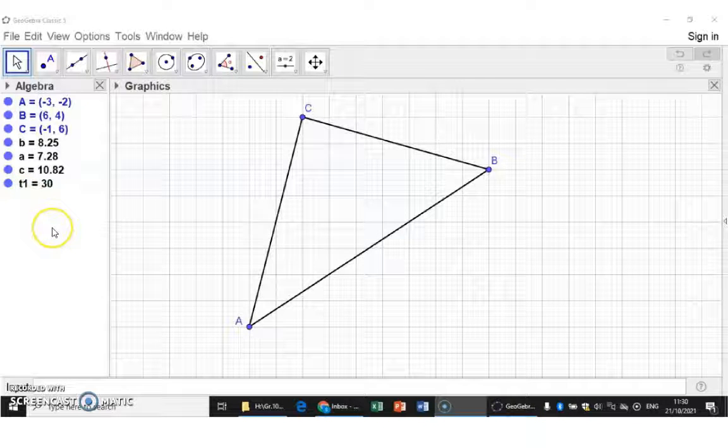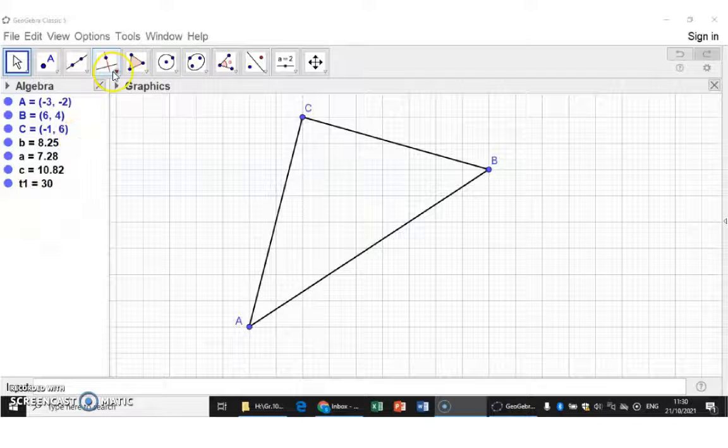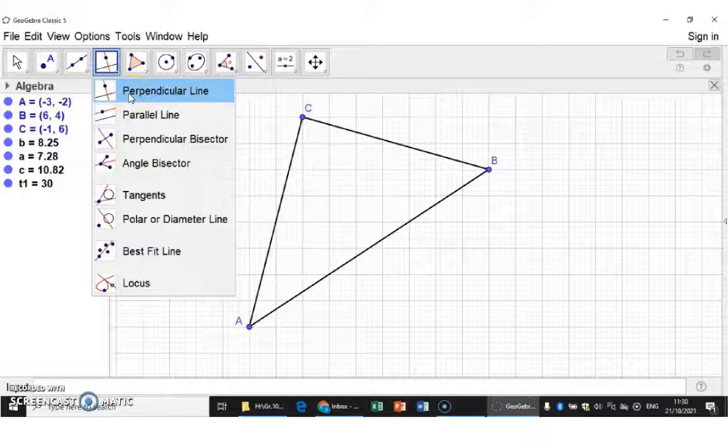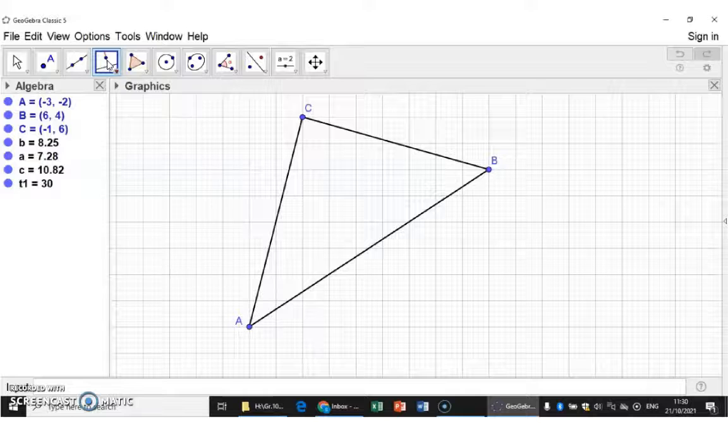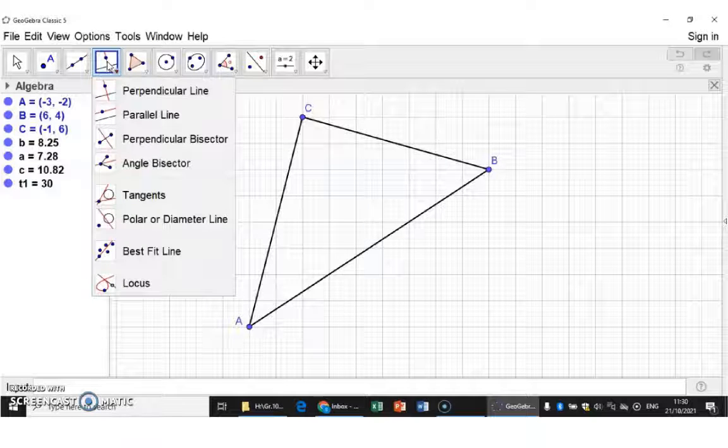When you want to indicate a 90 degree angle, I would advise you to use the perpendicular line option when drawing the angle. Otherwise, it is quite difficult to indicate that 90 degree angle neatly.